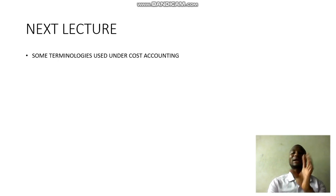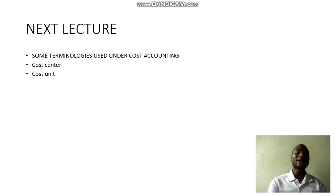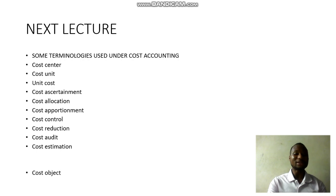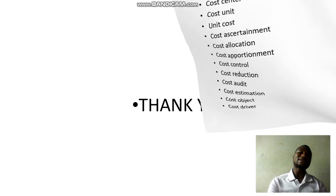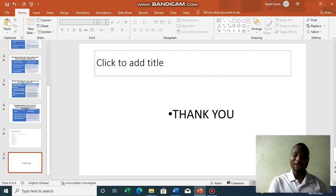In our next lecture, we will be learning some technologies used under cost accounting — it is very important to know what technologies are unique to this subject area. We will be learning things like cost center, cost unit, unit cost, cost ascertainment, cost allocation, cost apportionment, cost control, cost reduction, cost audit, cost estimation, cost object, and cost driver. I hope our next lecture will be interesting. Please subscribe to my channel and thank you for listening. Have a nice day, goodbye.